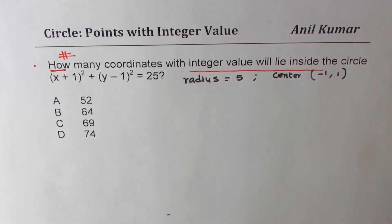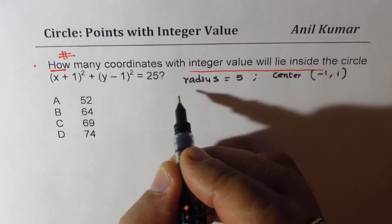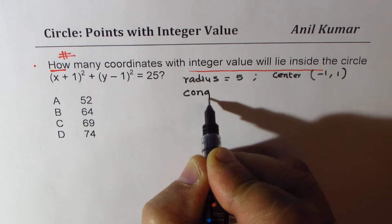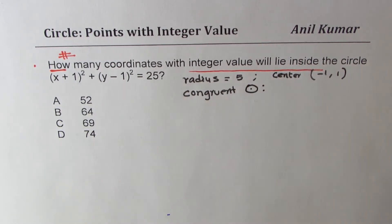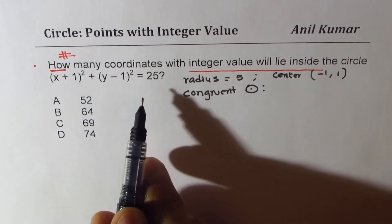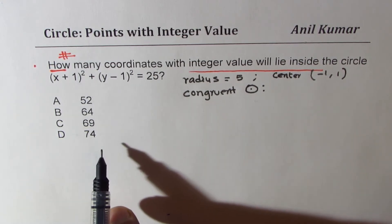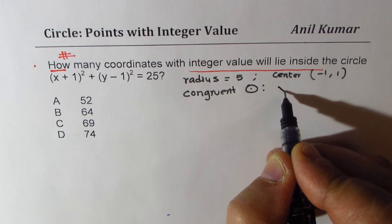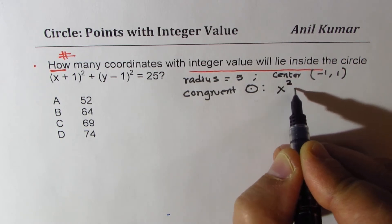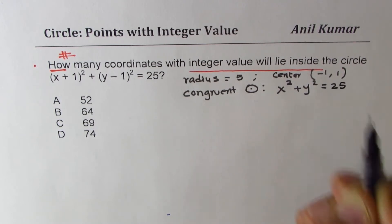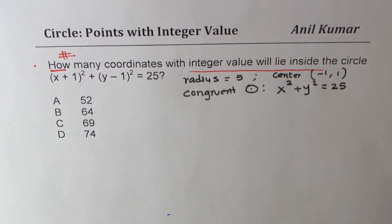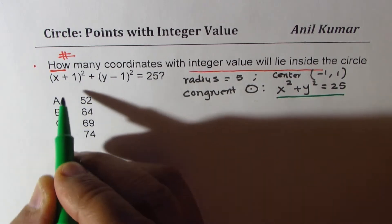So since we are only interested in numbers, we can always look into congruent circles. So the best to take is definitely the one with center at origin. So we will get back to the circle x² + y² = 25. Does it make sense to you? Both these circles will share same number of points. They are congruent.